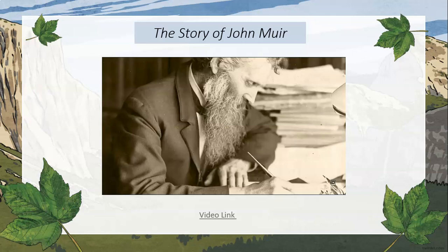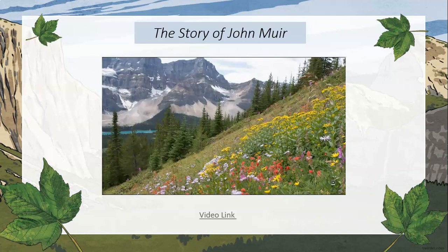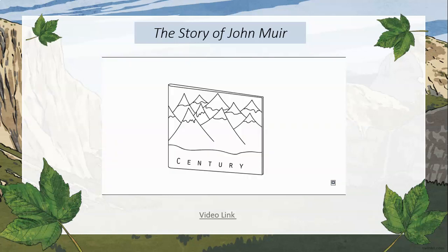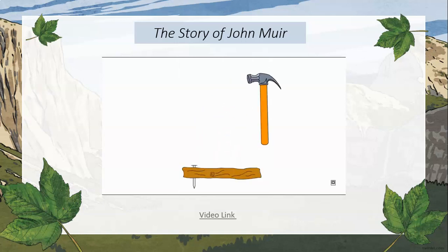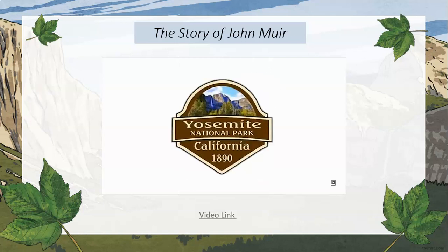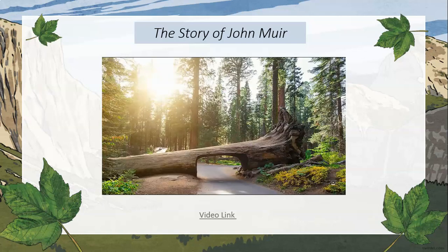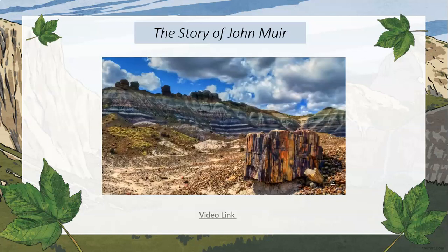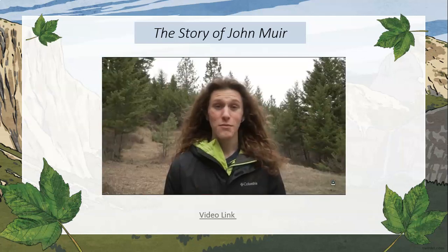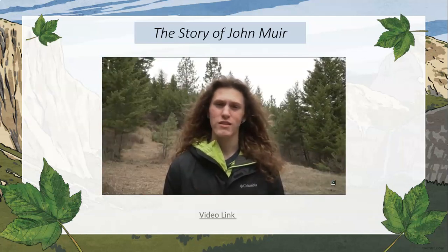Eventually Muir wrote another series of articles about the devastation of mountain meadows and forests by sheep and cattle, published in Century Magazine. The associate editor, Robert Johnson, and Muir worked at fixing this destruction. So in 1890, because of the efforts by Muir and Johnson, Yosemite National Park was created by Congress. John Muir also helped the creation of Sequoia, Mount Rainier, Petrified Forest, and Grand Canyon National Parks. Because of his extensive efforts on land conservation, he is often called the father of our national park system.